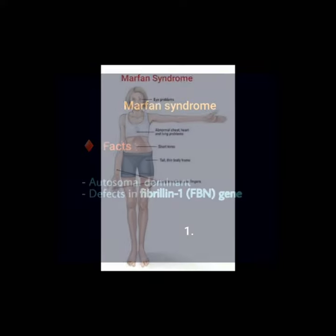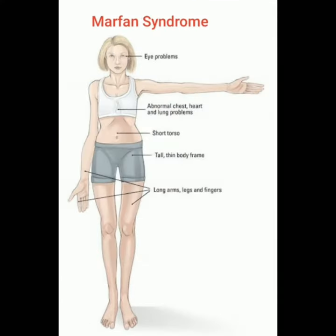The main clinical features are eye problems, abnormal chest, heart and lung problems, short torso, tall thin body frame, and long arms, legs, and fingers.